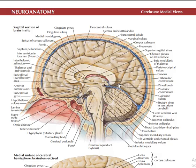In a sagittal section through the brain, you can see the different parts of the brain. Before we start with neurophysiology, it is best to understand the neuroanatomy of the brain. The ridges of the brain are called gyri, while the grooves are called sulci.